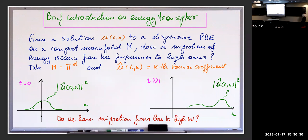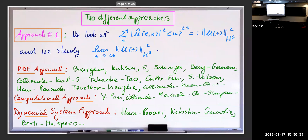One way to understand whether you have movement from low to high frequency is by weighting with |k|^s, which emphasizes large k, and then summing over all k. This gives the H^s norm squared. That's why people look at the asymptotic behavior of higher Sobolev norms. If s equals zero, that's the L2 norm — the mass, which is conserved. If s equals one in the defocusing case, that's related to kinetic energy and you have a bound for it. So it makes sense when s is larger than one.